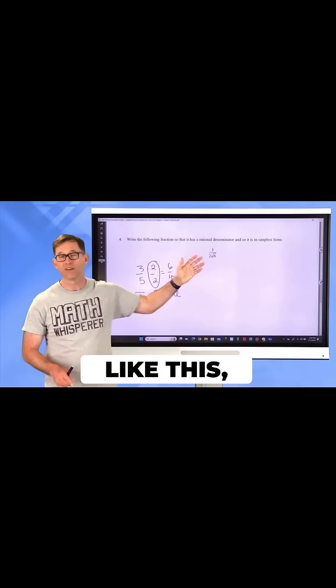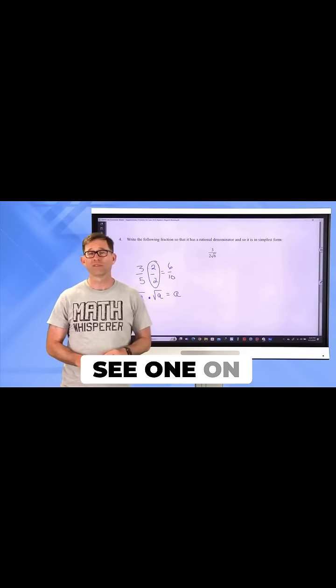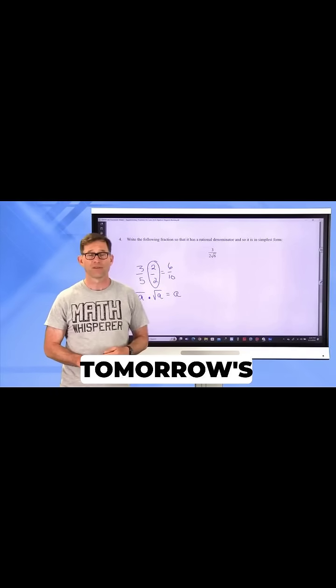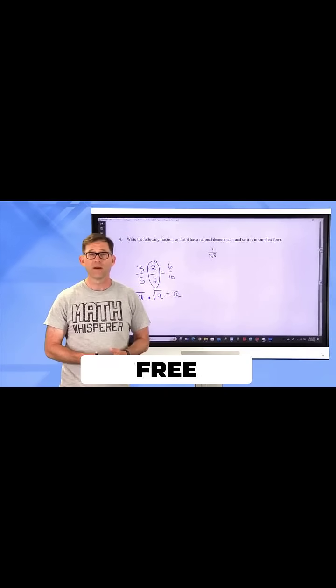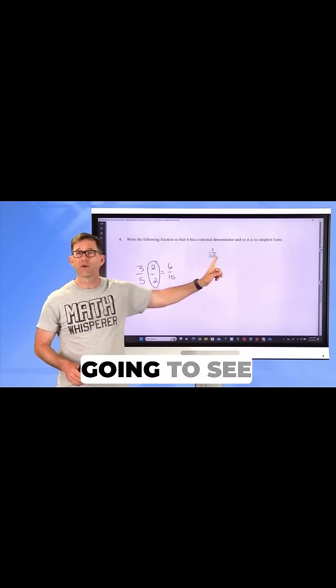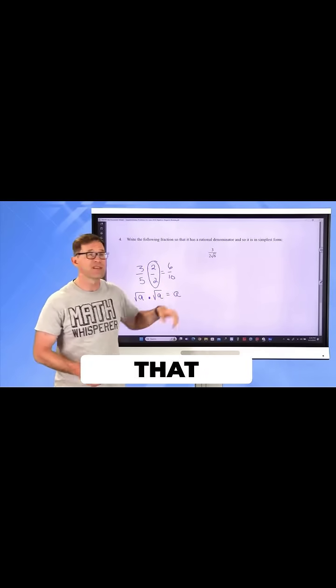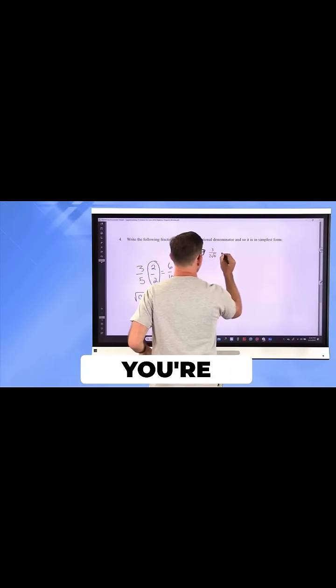When I see a problem like this — and I can almost guarantee you will see one on tomorrow's test, might be a free response, might be multiple choice, I don't know — you're going to look at it and you're going to see that denominator and you're going to see that radical 6. And what you're going to do is you're going to multiply the top and the bottom by the square root of 6.